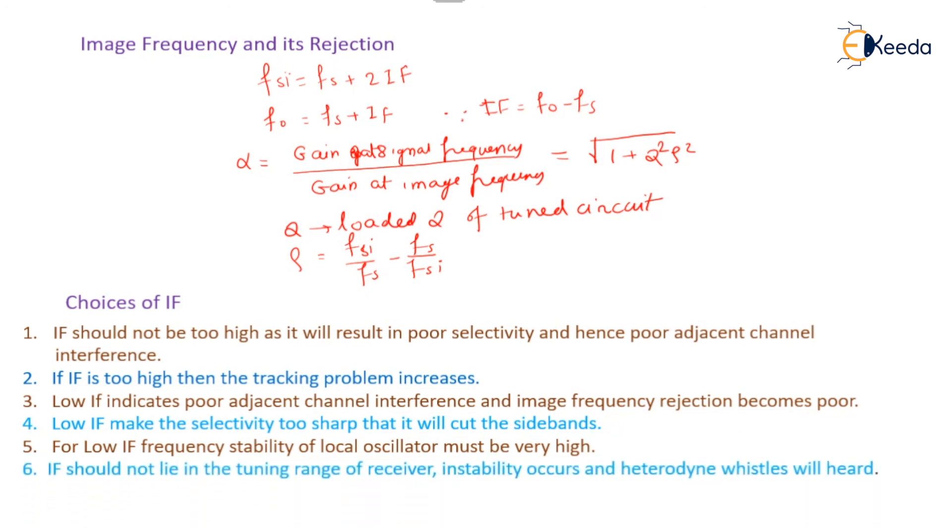IF should not lie in the tuning range of the receiver. Otherwise, instability occurs and heterodyne whistles will be heard. Now, this is all about the superheterodyne receiver and the image frequency and its rejection. Thank you for watching.